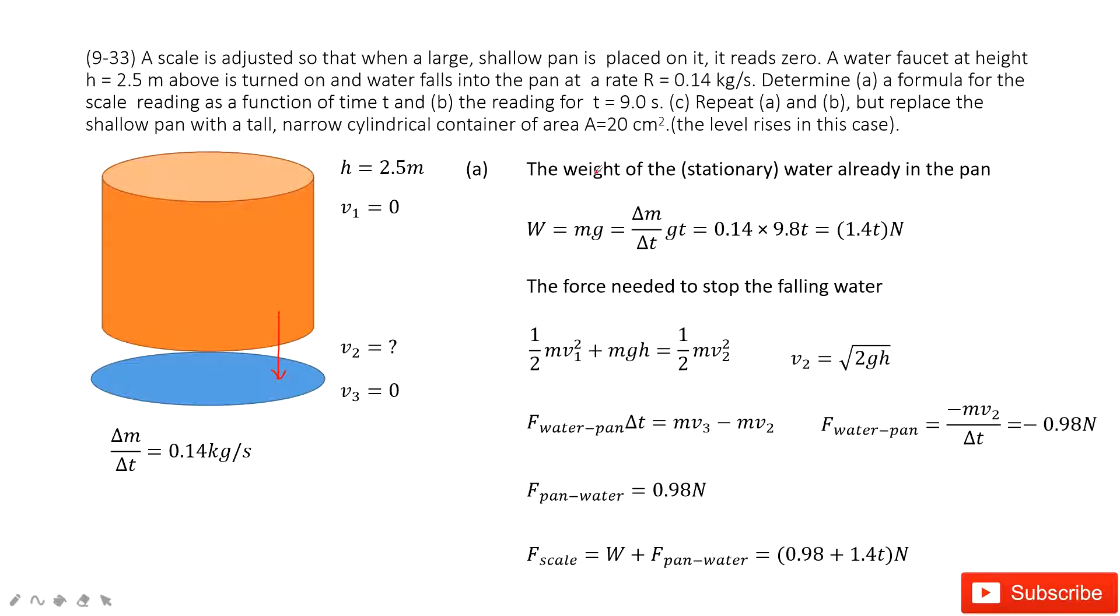The first part is the weight of the water already in the pan. The second part is the force needed to stop the falling water. So the first part is very easy - the weight of the water.